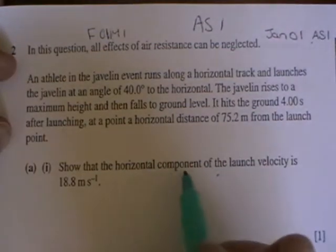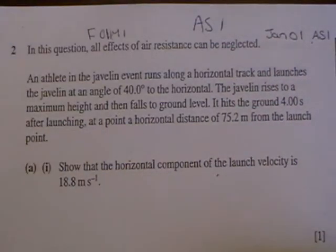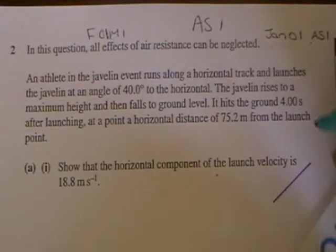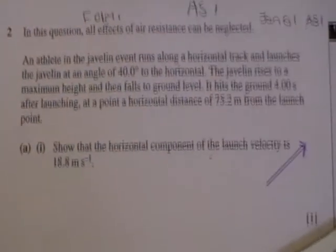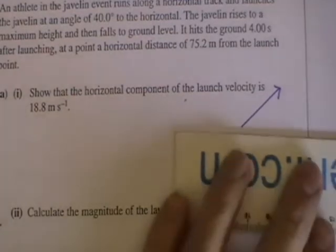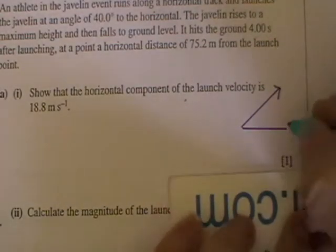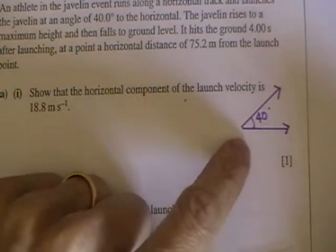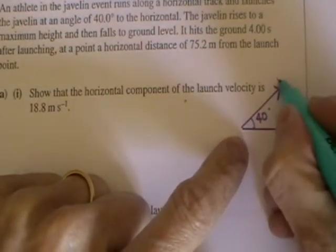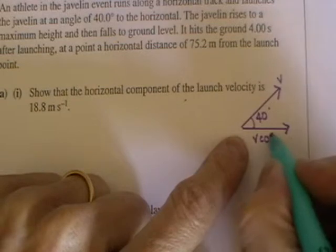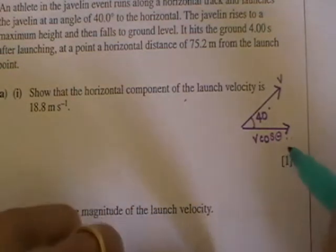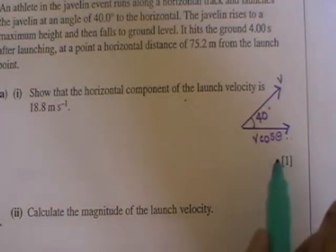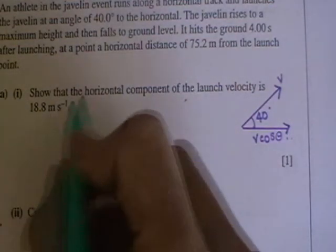It says show that the horizontal component of the launch velocity is 18.8 metres per second. If I just draw here at the side to see what you're actually looking for, you know that it's launched at an angle of 40 degrees and you have a horizontal velocity. That's your horizontal component. If this is launched at a speed of V, then it's V cos theta. Now we don't have enough information to use V here, we don't actually have that value. So we're going to use speed equals distance over time.